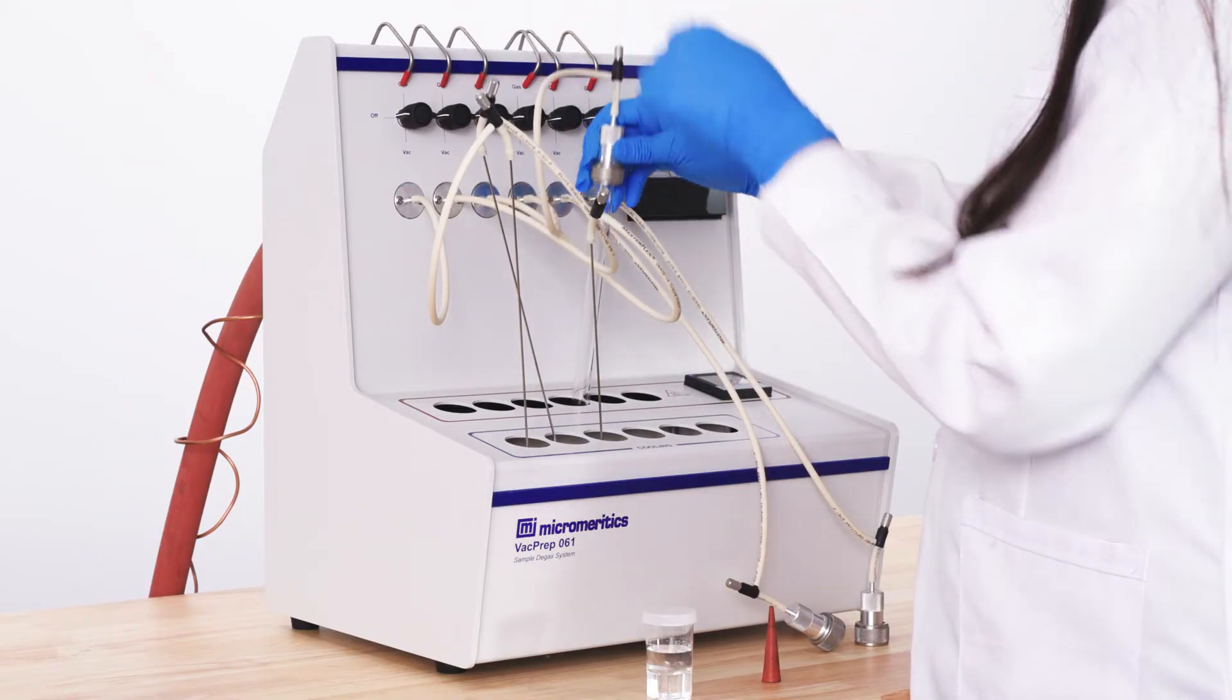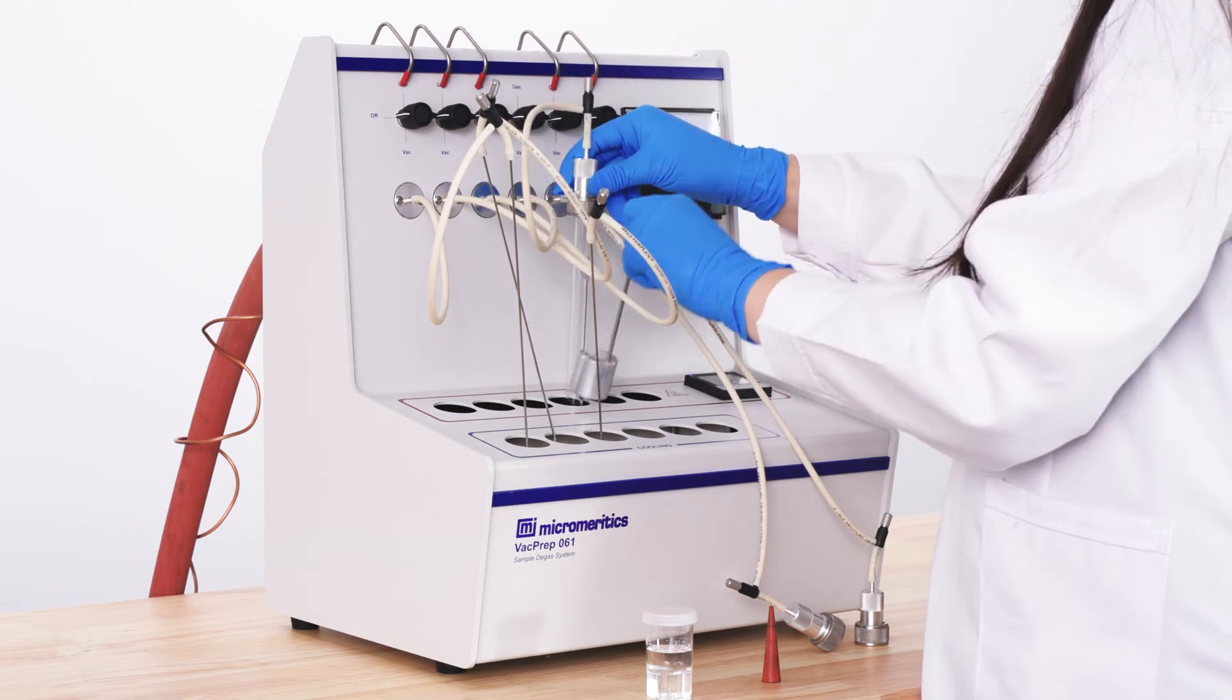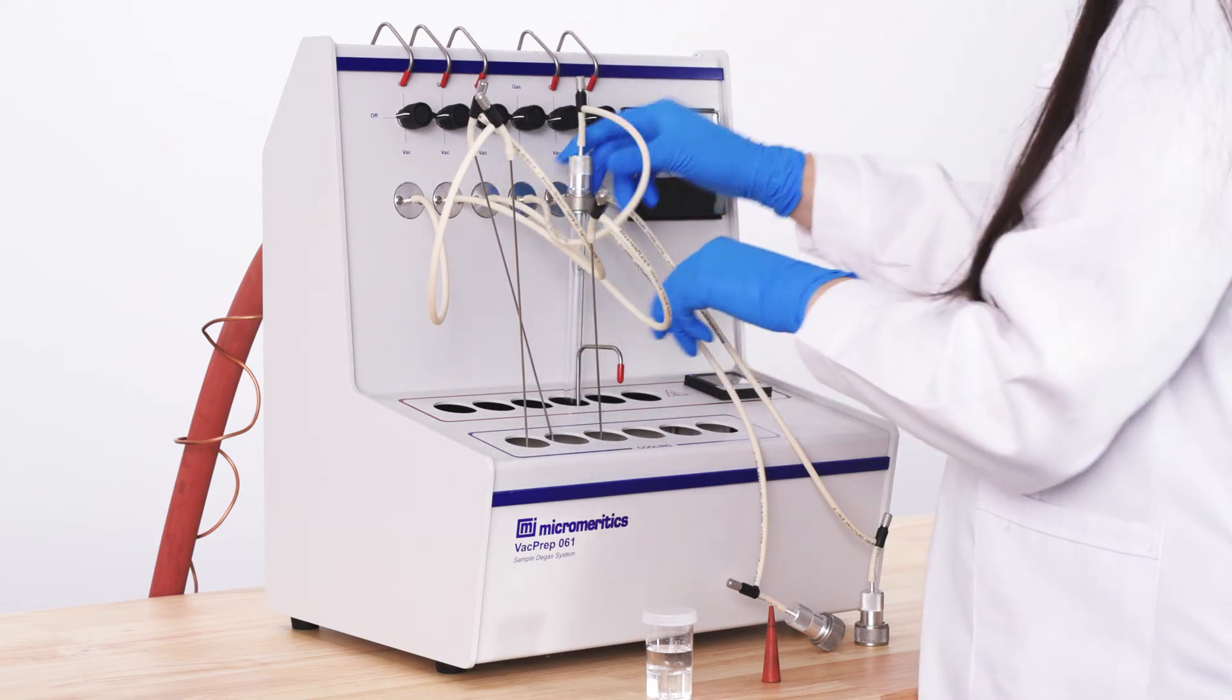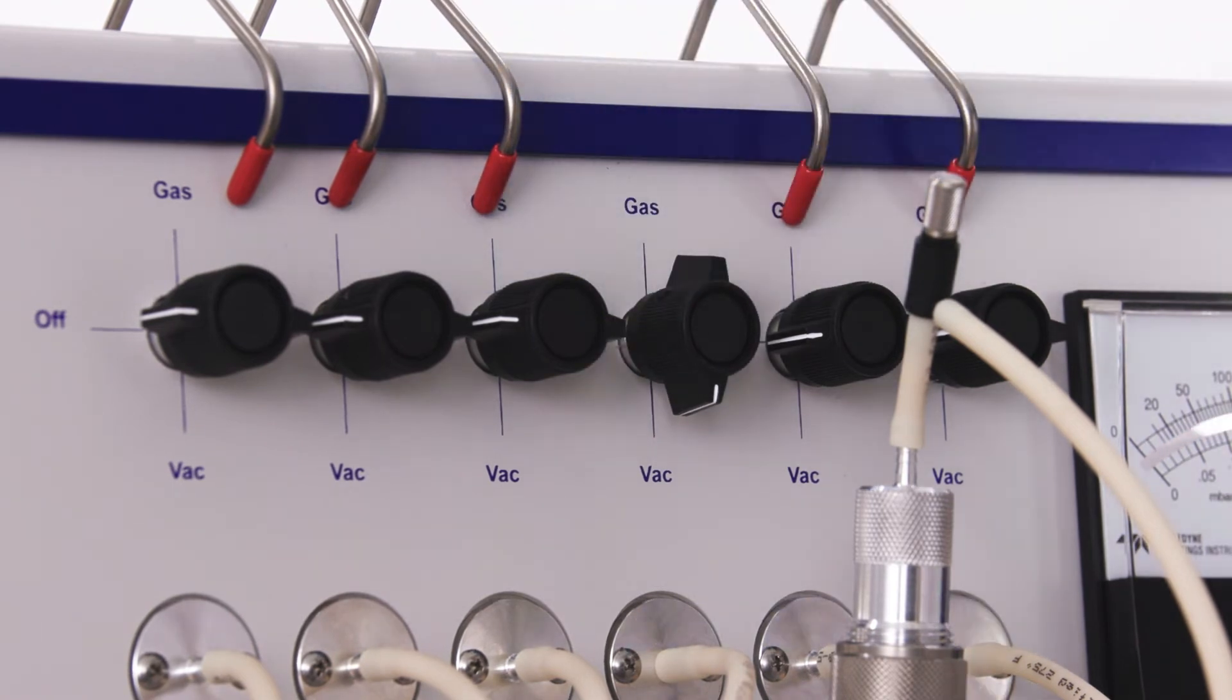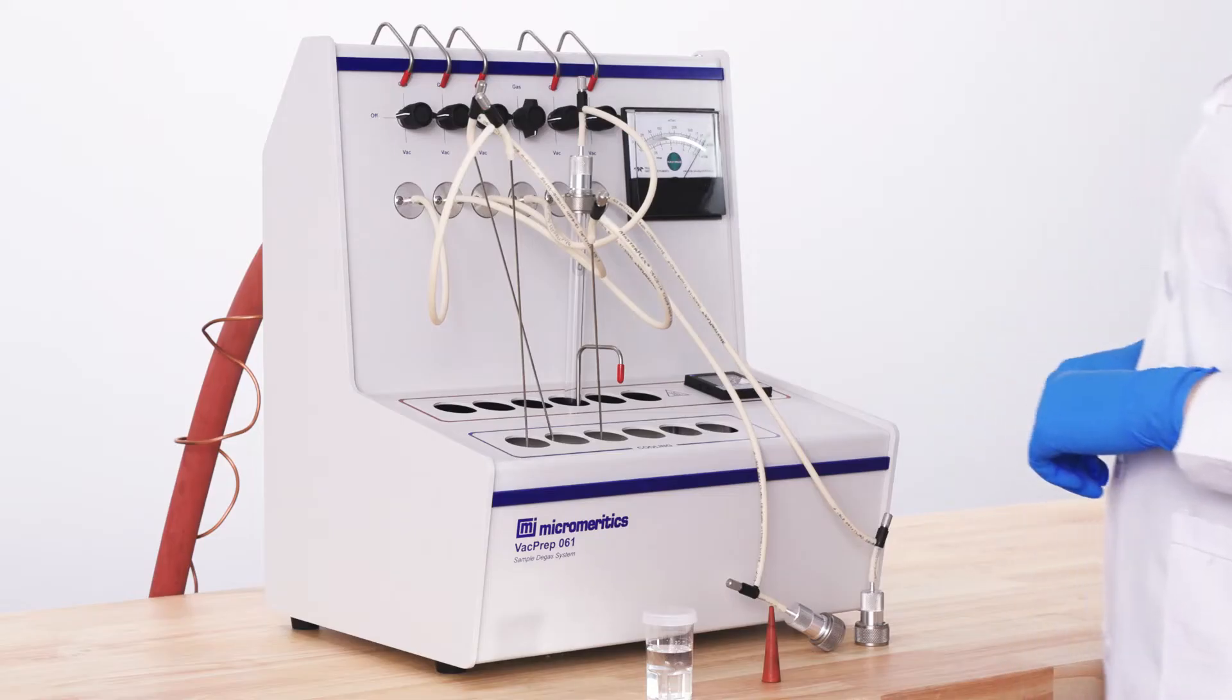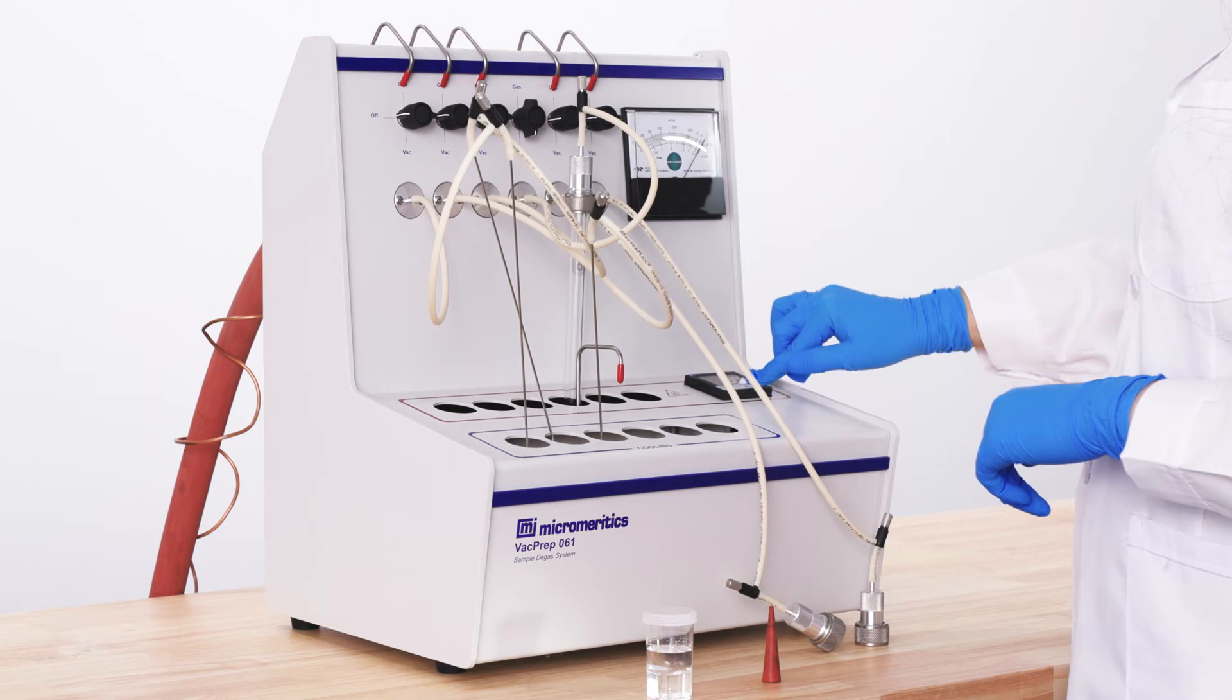Place the tube into the heating station. To begin pulling a vacuum, turn the knob for your desired port downwards toward vac. Adjust the temperature using the arrows on the keypad.